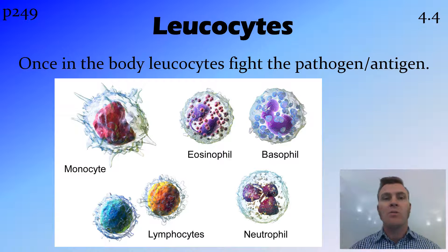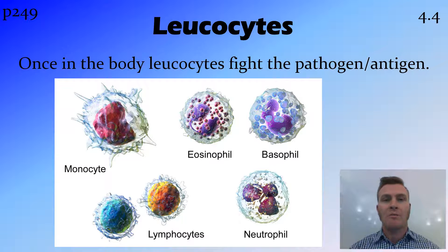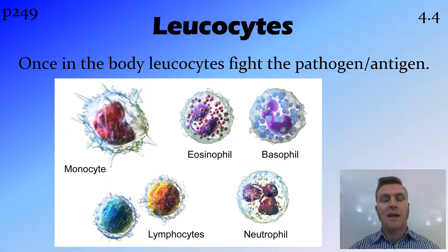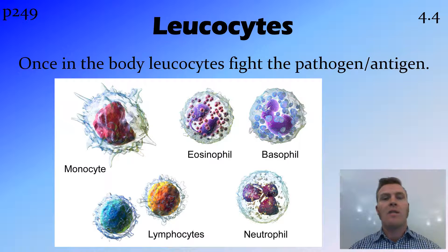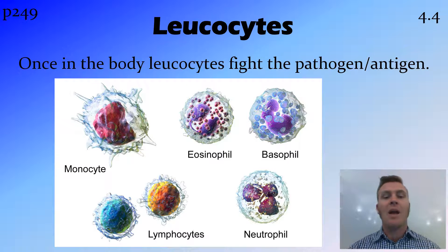Up until this point, we've talked about leukocytes as if they're one thing. We say you've got erythrocytes — red blood cells — because they carry oxygen. Leukocytes are white blood cells that fight infection. They do fight infection, but they're not just one thing. It's basically a class of things, and there's a lot of different things that fall in that class.